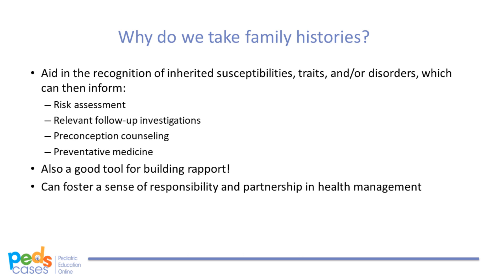Family history can also help us tailor follow-up investigations. Just like the rest of the history and physical exam, it can influence our clinical suspicion and decision-making, and may lead us to order certain clinical, biochemical, and/or genetic tests. As our genetic testing options improve and expand, we must be able to identify patients or families for whom testing or intervention would be relevant and beneficial. A shotgun approach to genetic testing is not feasible ethically, nor is it sound stewardship of healthcare resources. Family history is thus an important tool in helping us choose investigations most likely to yield diagnostic or otherwise useful information.